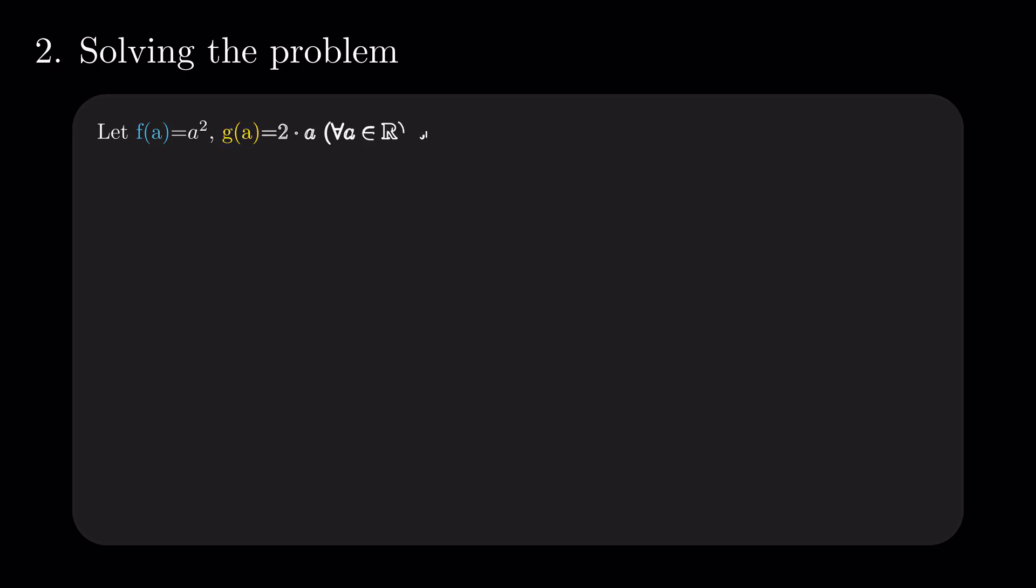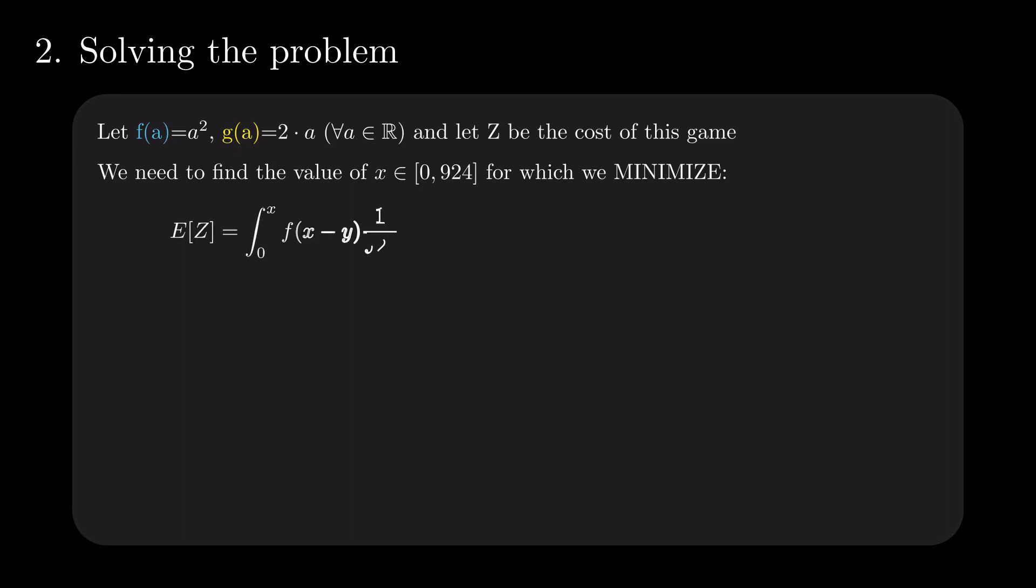Let's put this into formulas. Let f be a squared and g be 2 times a. Also, let z be the cost of this game. We are looking for x in the interval 0, 924, which minimizes our expected loss. Namely, the integral from 0 to x of f of x minus y, dy, plus integral from x to 924 of g of y minus x, dy, divided by 924.